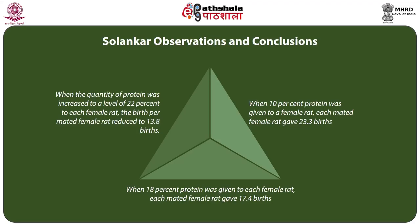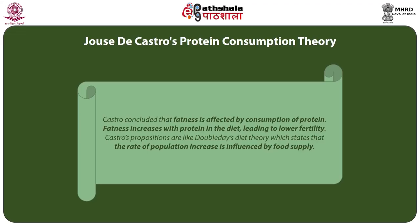Solankar's observations were as follows: when 10 percent protein was given to a female rat, each mated female rat gave 23.3 births. When the quantity of protein was increased to 22 percent for each female rat, the births per mated female rat reduced to 13.8. Castro concluded that fecundity is affected by consumption of protein — fecundity increases with lower protein in the diet, leading to higher fertility.